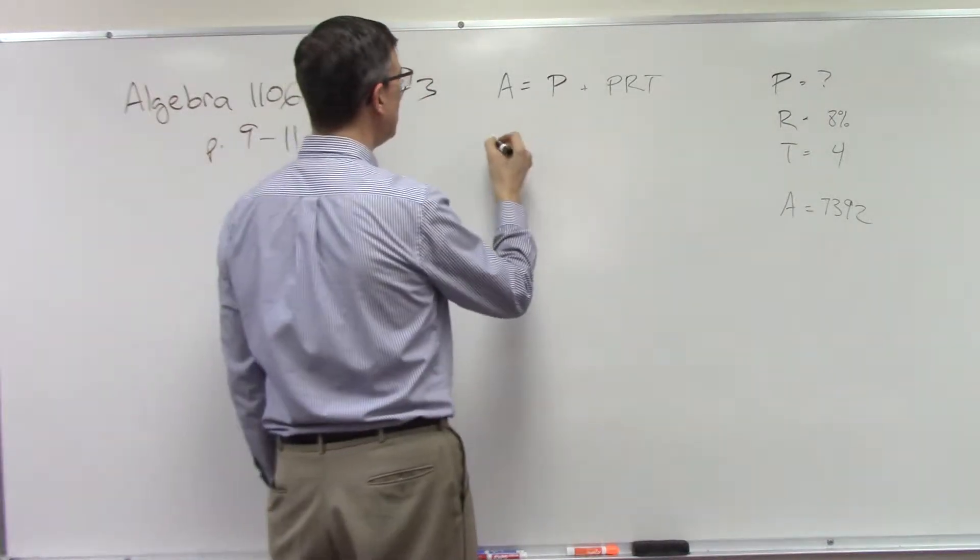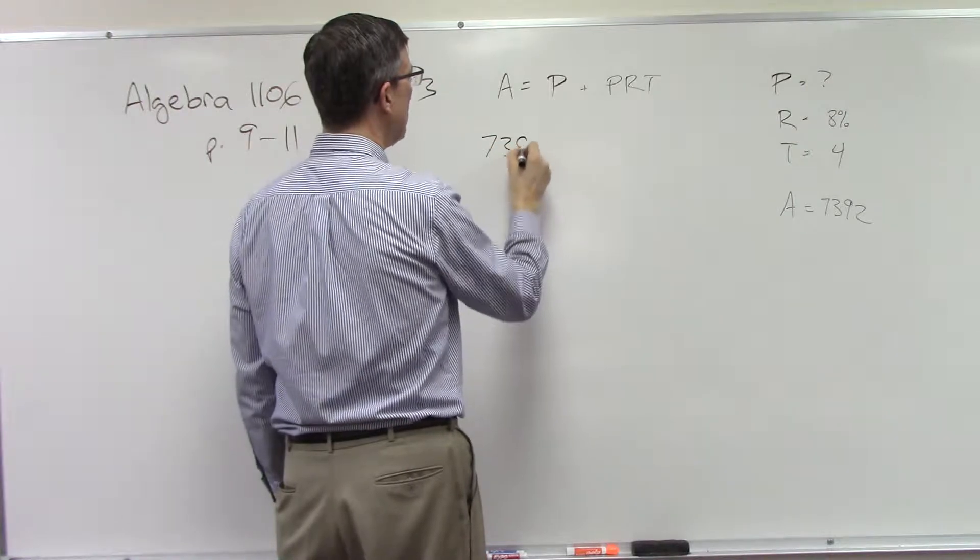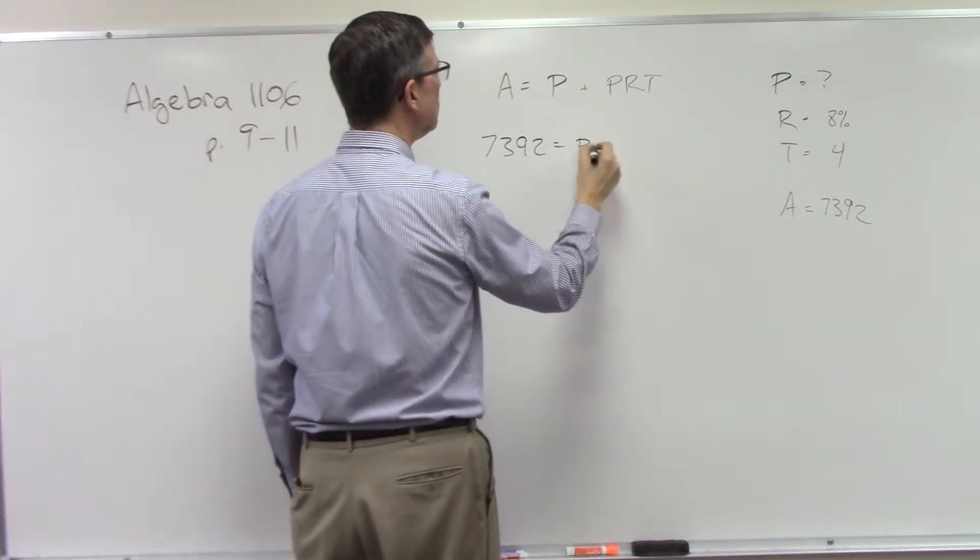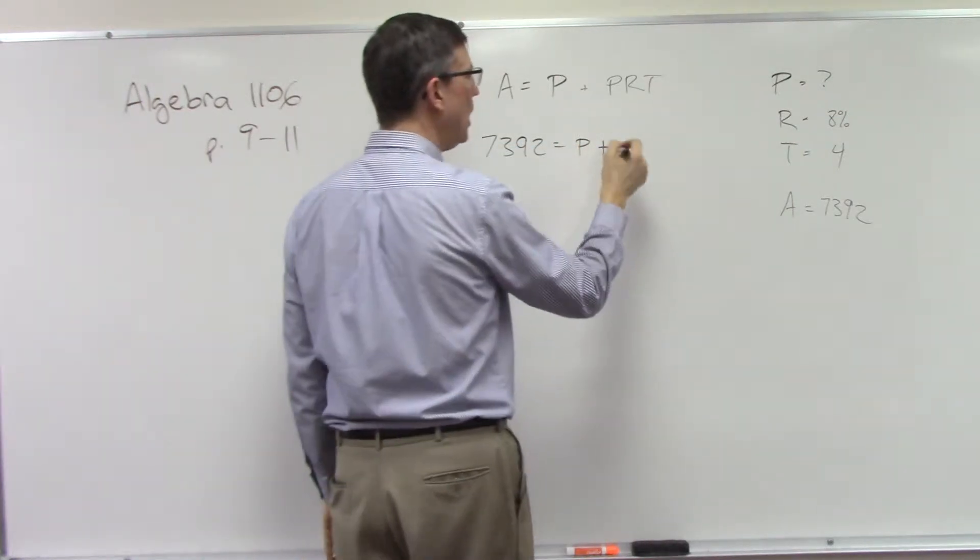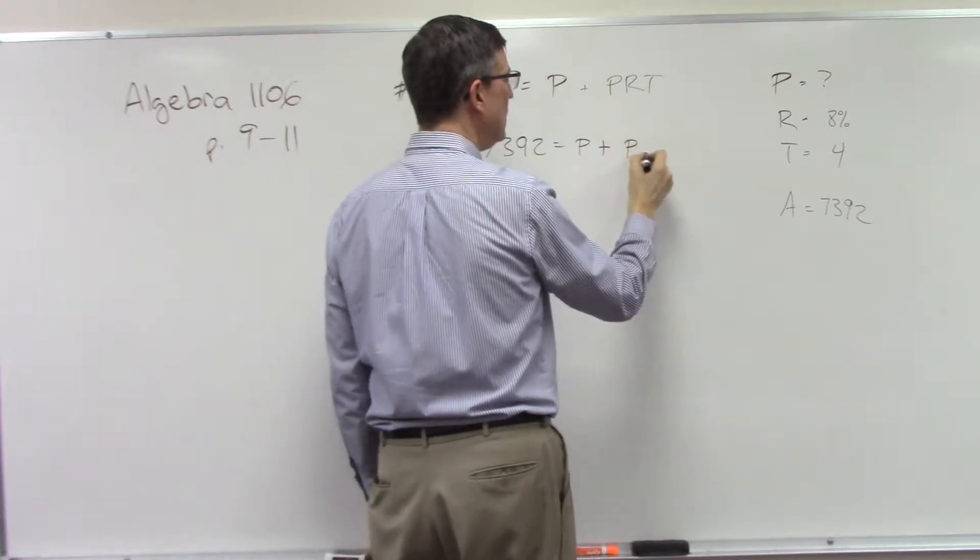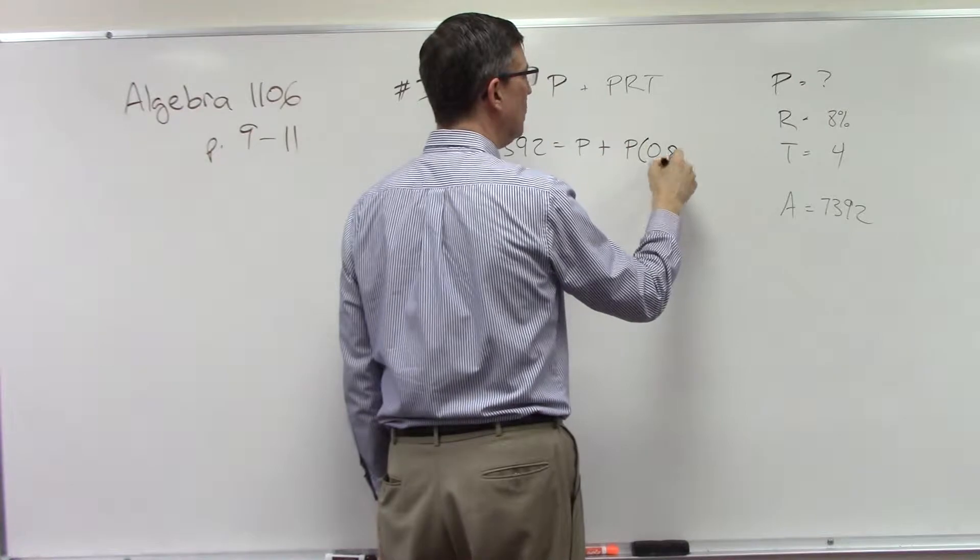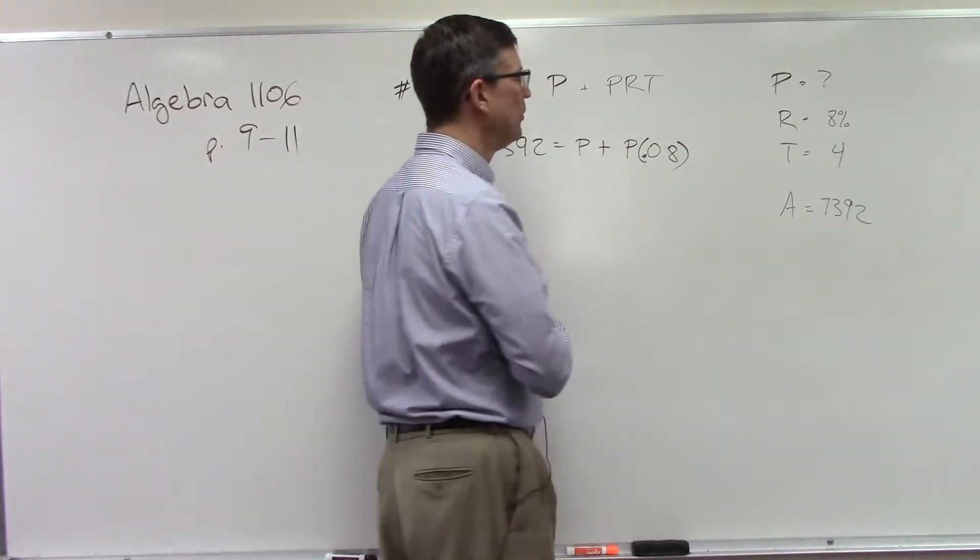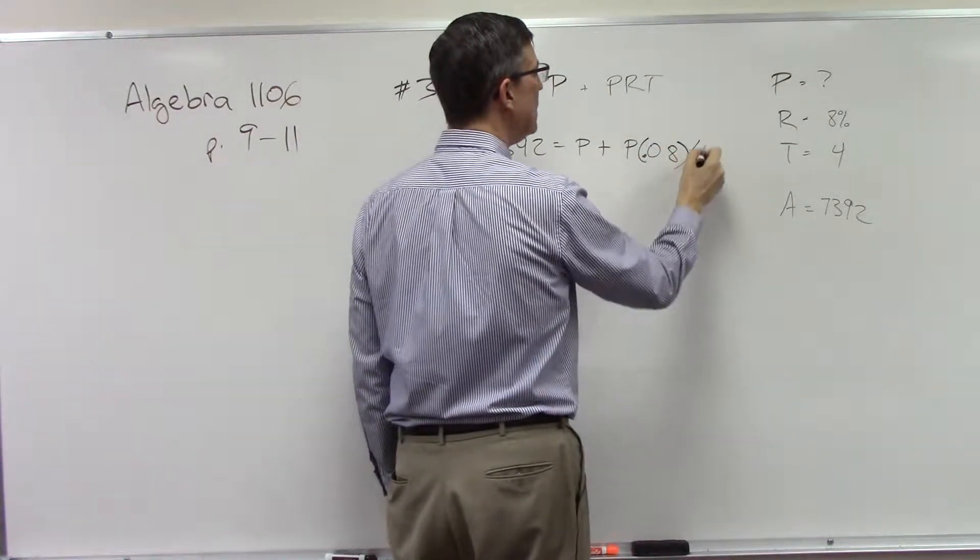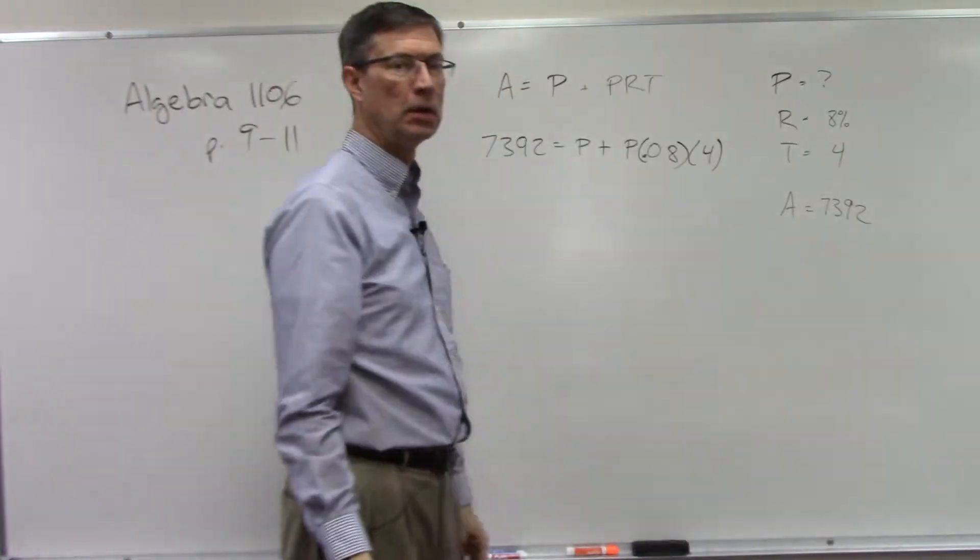If I plug this in, I get 7392 equals P plus P times 0.08 times the 4.